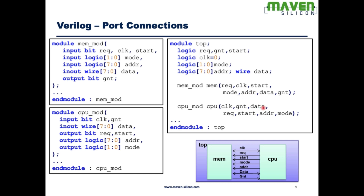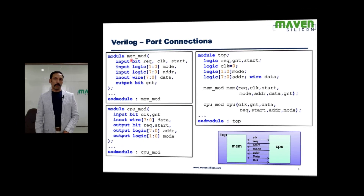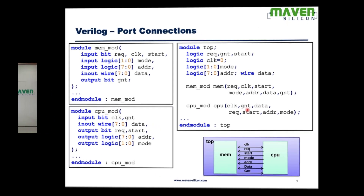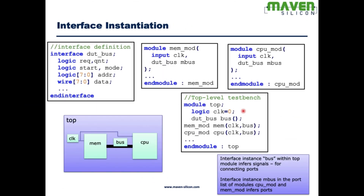In Verilog we have to define all the ports for mem and cpu modules individually, plus define additional signals when making the connection. With interface, we define the interface and the bus — dot_bus — and use it to connect mem and cpu. We define all signals as logic except data, which is inout, so data is defined as wire.